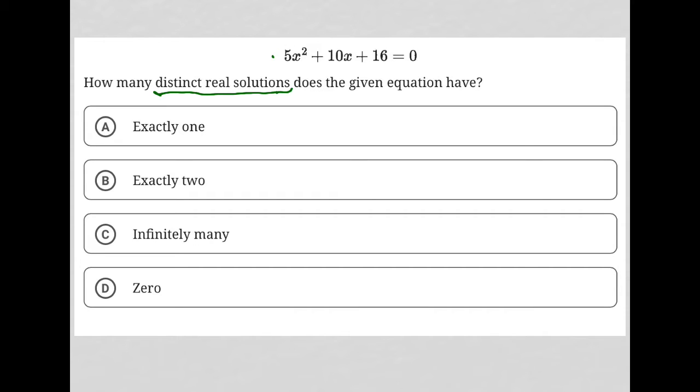In fact, I would say it's a hint to using what we call the discriminant. The discriminant is b² - 4ac. If b² - 4ac is greater than zero, we're going to have two real solutions. If it equals zero, we're going to have one real solution. And if it's less than zero, we're going to have no real solutions.